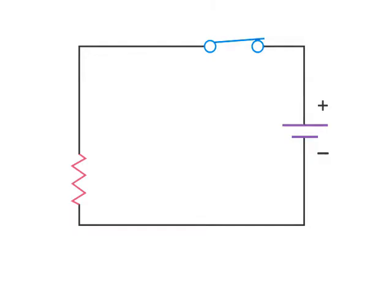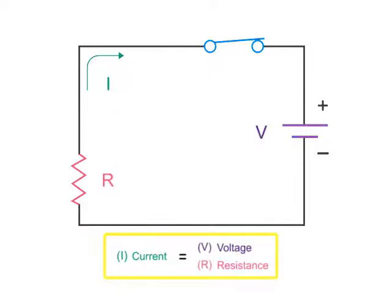Ohm's law is the relationship between current, voltage and resistance. Ohm's law states that current is directly proportional to the voltage and inversely proportional to the resistance in a circuit.